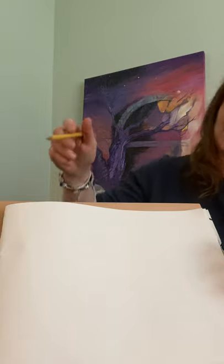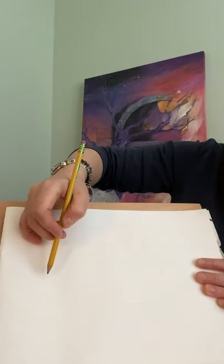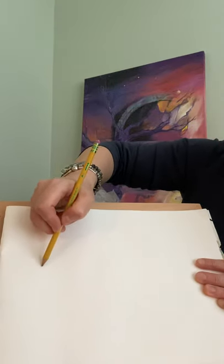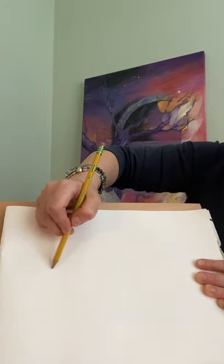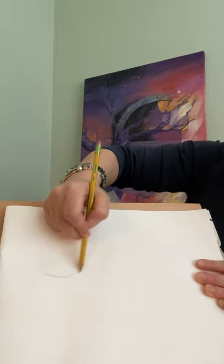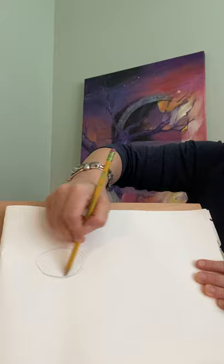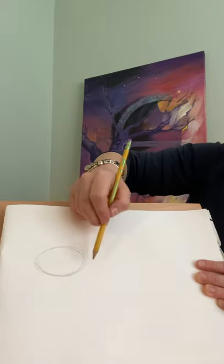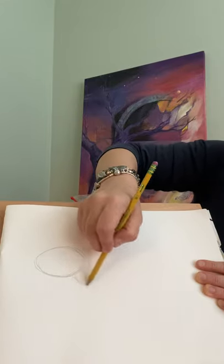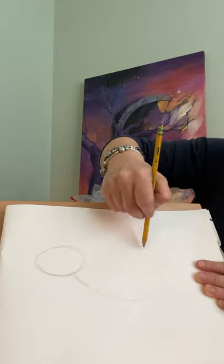So what we're gonna do ladies and gentlemen is we're gonna start with our frog's body. Okay I'm gonna start with a pencil today. We're gonna start towards the center of the page. We're gonna start with our head shape, sort of an oval. Then we're gonna come down a little bit and we're gonna do a body.